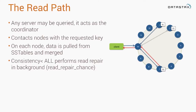Reads in Cassandra are very similar to writes — they're coordinated. Whichever node you happen to be talking to for a given read request is going to be the coordinator node, and it's not a special node type; it's just the one that coordinates with the rest of the nodes for that request. On an individual node level, Cassandra goes to disk and looks for whatever data you asked for, and it might have to look in multiple SSTables.